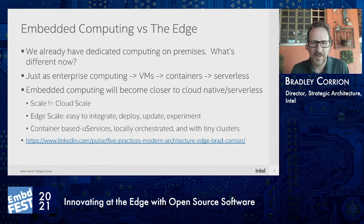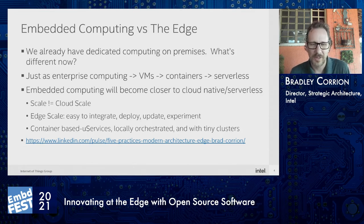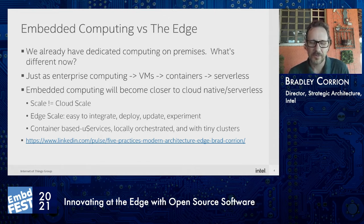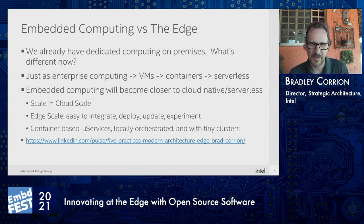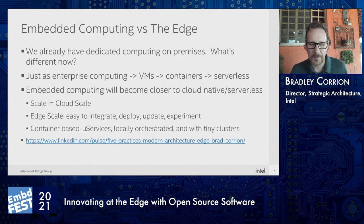Our argument is that embedded computing will have a similar migration. I don't think it'll go through all the steps enterprise computing went through, since we already see VMs and some containers today. But edge computing should use these same tools, technologies, and techniques that our cloud ecosystem is driving — it helps find employees and developers who know the technologies, creates consistency in development teams, and you can adopt things like DevOps consistently across projects.